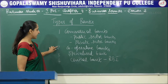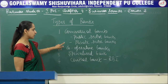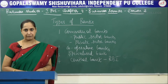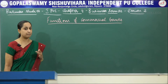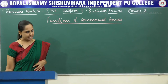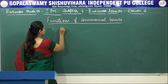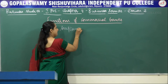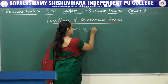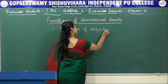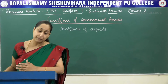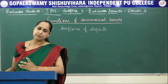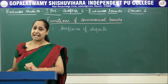So these are the different types of banks: commercial banks, cooperative banks, specialized banks, and central bank. Now let us see what are the functions performed by commercial banks. The first function is acceptance of deposits. Deposits are the basis of loan operations. Banks are both borrowers and lenders of money.